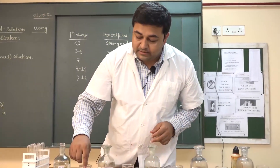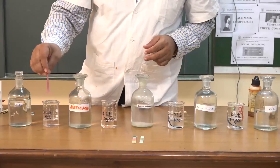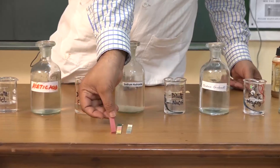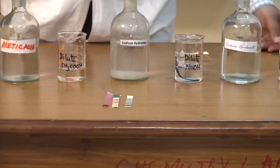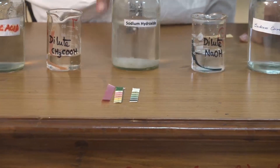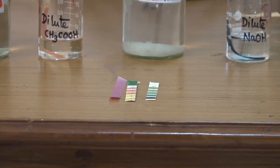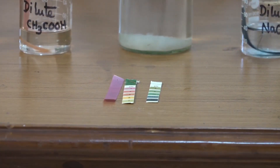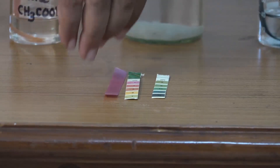I am collecting the pH paper from the hydrochloric acid solution and matching its color. The color is matching with almost the pH of 3. Since it is from hydrochloric acid and the pH is below 7, it means it is acidic in nature.